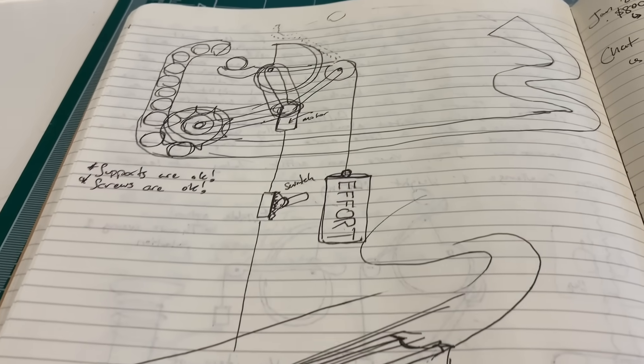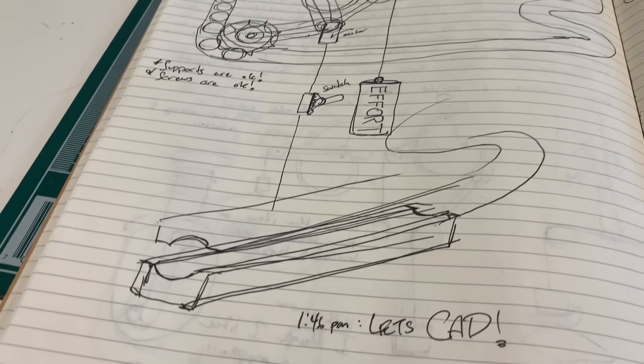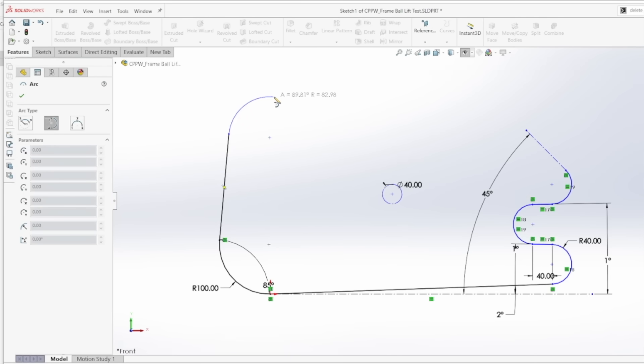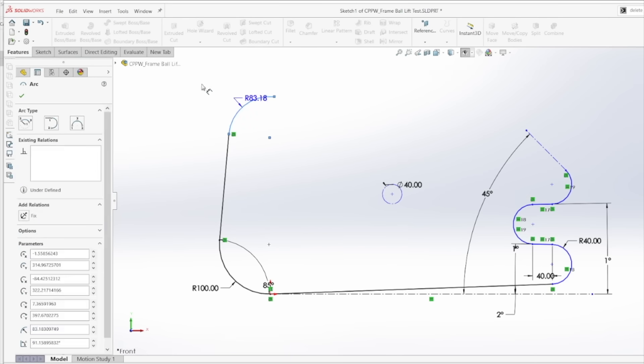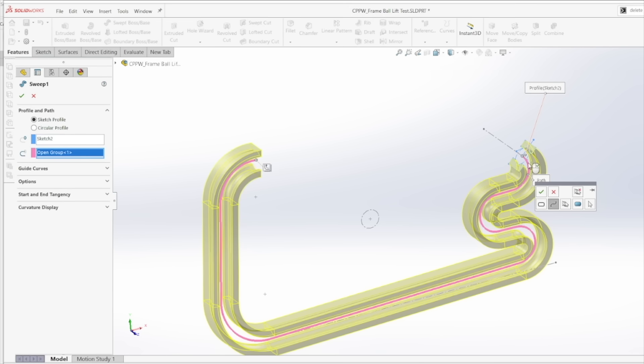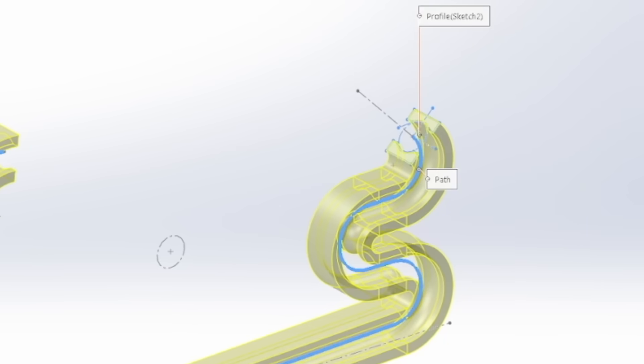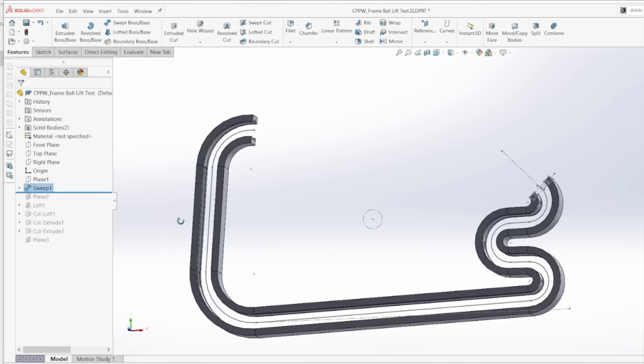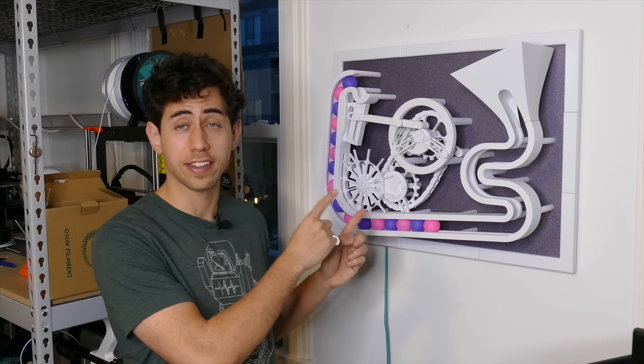With the design concept in mind, it was time to go to CAD and start modeling some parts. The first thing I did was I created a rough outline for the track, so I could start getting a feel for the scale of everything in this design. The track was basically just a swept feature, where I swept this profile along the track outline, and that's how we got this basic shape, which is actually very similar to the design that you see right here.